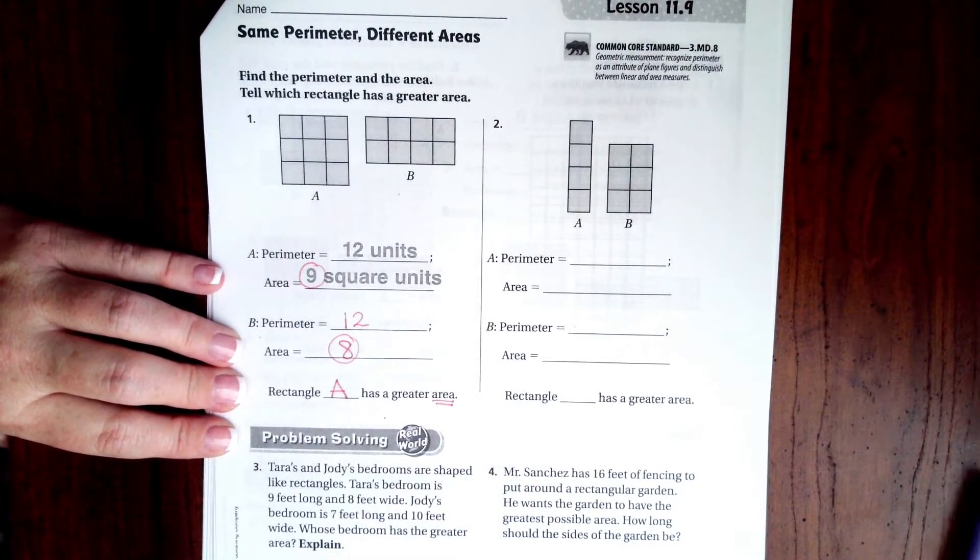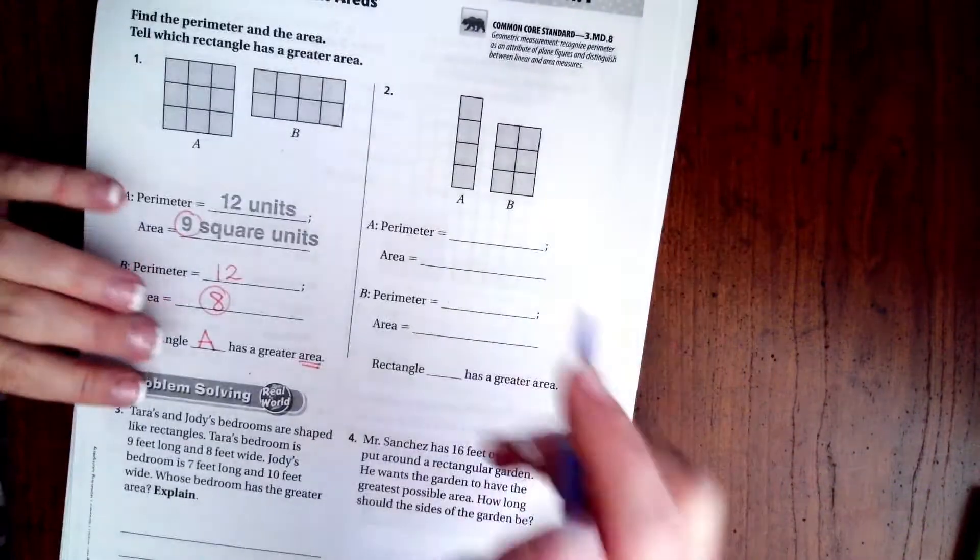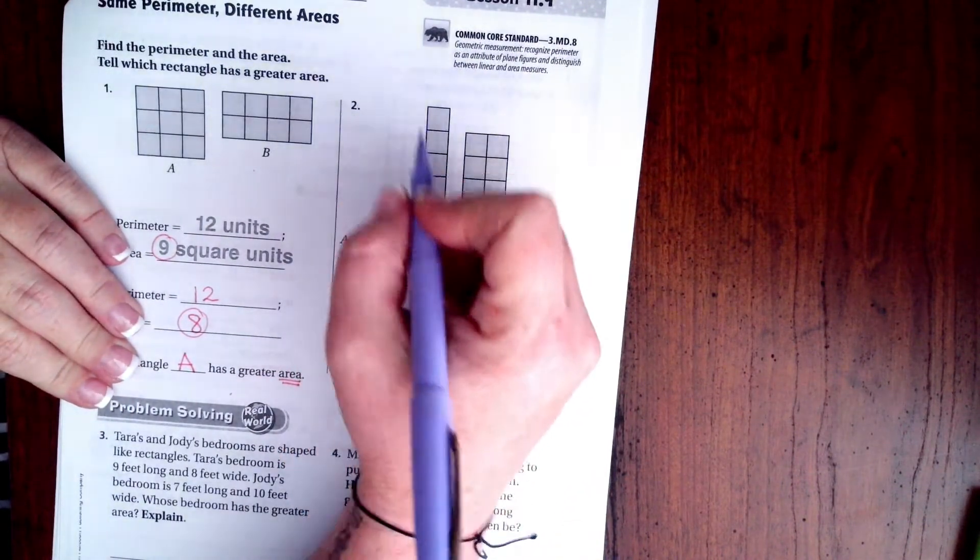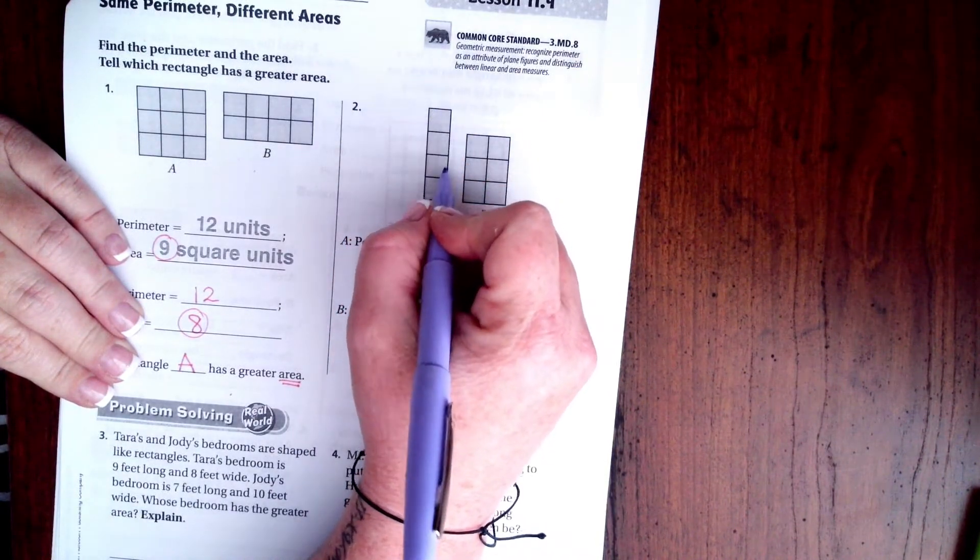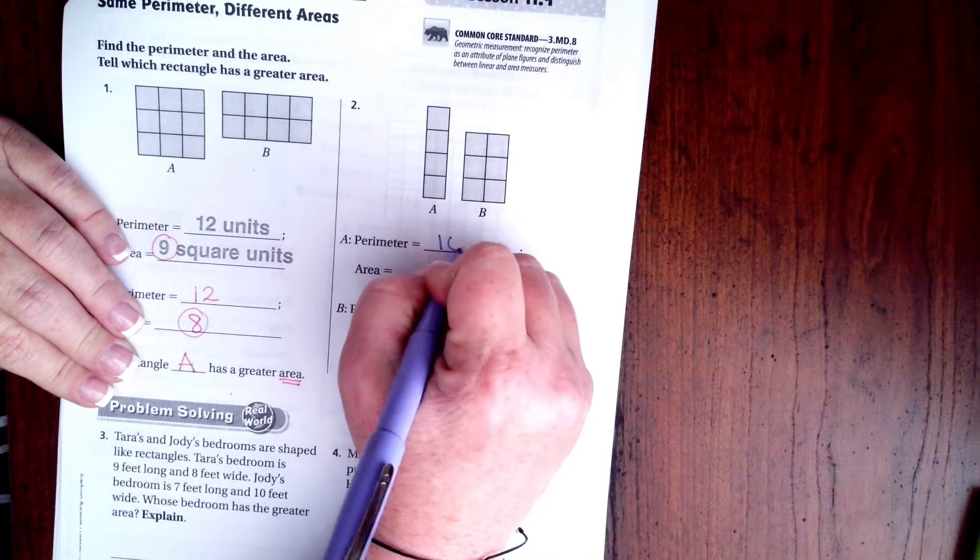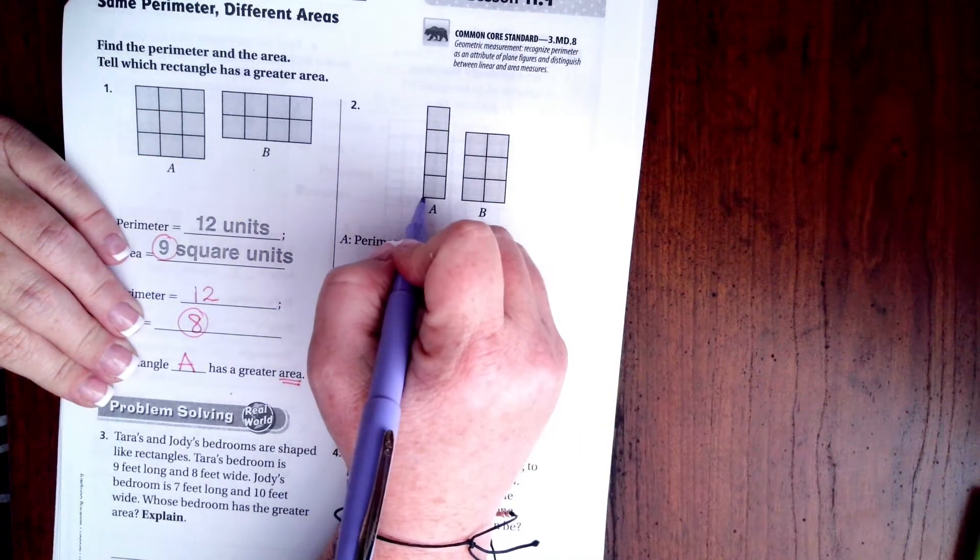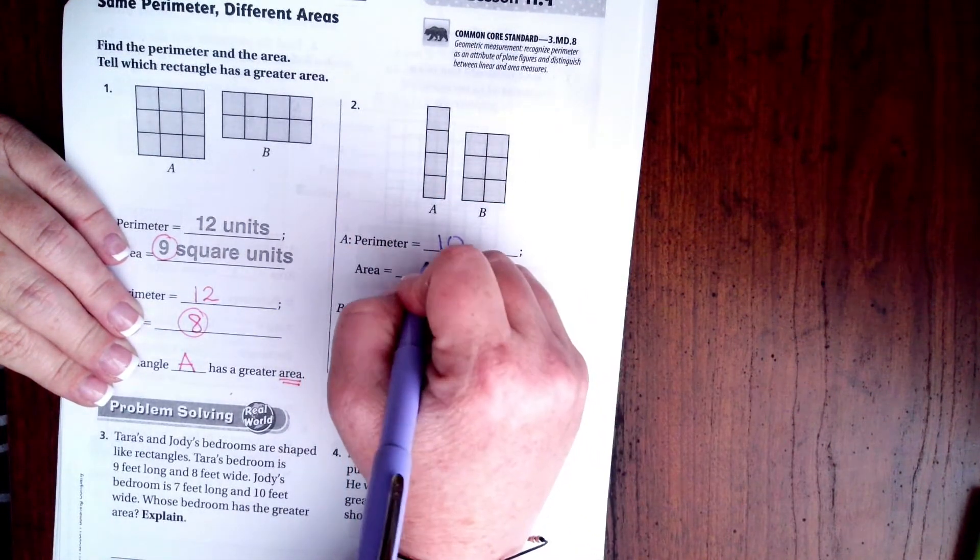Alright guys, let's do number 2. Perimeter of A is 1, 2, 3, 4, 5, 6, 7, 8, 9, 10. And the area is 1 times 4, which is just 4, okay?